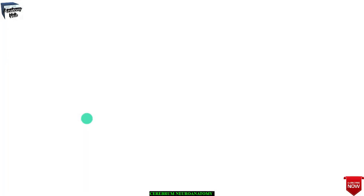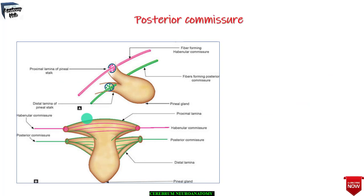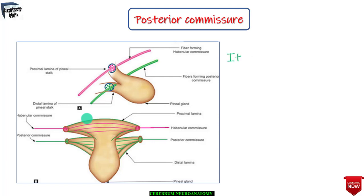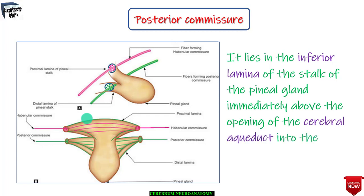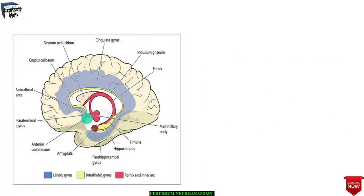The posterior commissure is a slender bundle of white matter fibers that crosses the midline through the inferior lamina of the stalk of the pineal gland. It interconnects the superior colliculi, pre-tectal, and interstitial nuclei of the two sides. It lies in the inferior lamina of the stalk of the pineal gland, immediately above the opening of the cerebral aqueduct into the third ventricle.